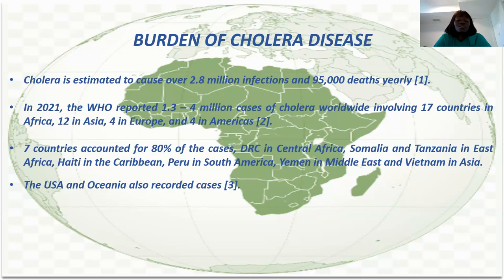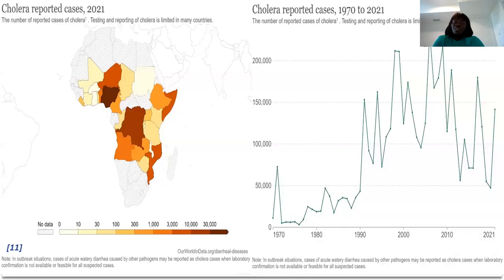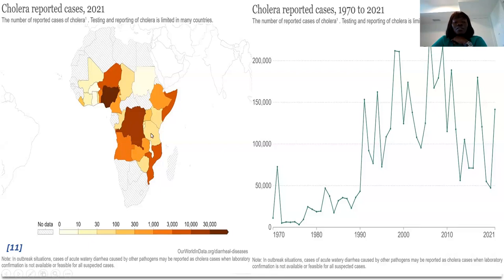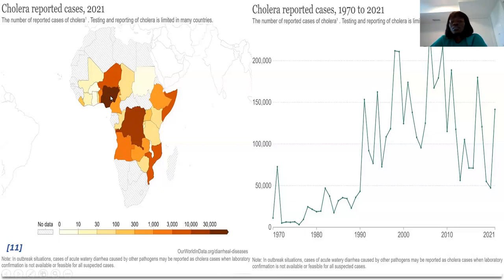Although cholera has also been reported in the US. Looking at the map of Africa, the brownish areas indicate where cholera is more infectious and more endemic, and Nigeria is one of those areas. It is also affecting other countries, but not as severely as Nigeria. Looking at the trajectory from 1970 to 2021, we can see the cases of cholera outbreak over that period.